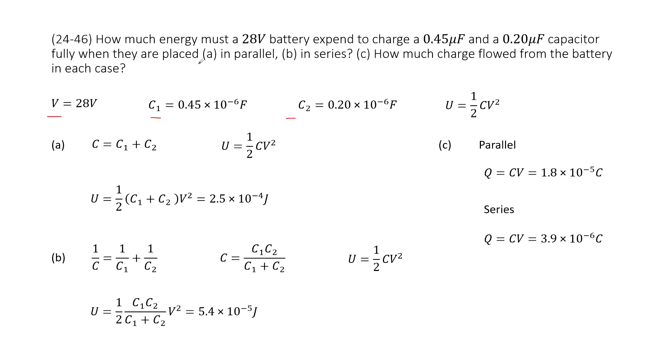So first, we consider these two capacitors in parallel connection. For parallel connection, the equivalent capacitance just equals C1 plus C2. Now you can see we look at the quantities given: the potential difference V, C1, and C2.